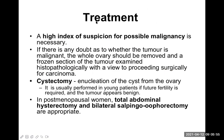Regarding treatment, a high index of suspicion for possible malignancy is necessary, because benign and malignant tumors may sometimes be difficult to differentiate. Think about the tumor as malignant until proven otherwise — a benign tumor will not kill the patient, but a malignant tumor would. If there is any doubt as to whether the tumor is malignant, the whole ovary should be removed and a frozen section of the tumor examined histopathologically, with a view to proceeding surgically for carcinoma.